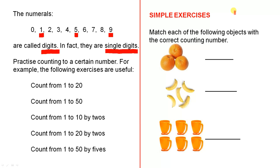Here are some simple exercises. Match each of the following objects with the correct counting number. So here we see some oranges. If we go 1, 2, 3, that's what we write. This mark on the page represents the number 3, and in real life it could represent 3 oranges, or 3 of anything else. Let's look here: 1, 2, 3, 4, 5. So here we have 5 bananas. And we have 6 cups.